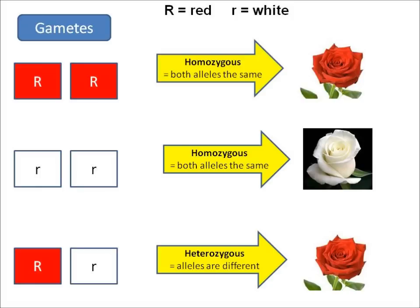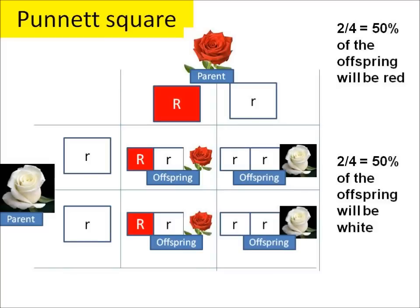But what if it gets one copy of the gene which is red and the other copy is white — one allele is red and the other allele is white? Well, in this case the rose is red. So we know that red is dominant and white is recessive.